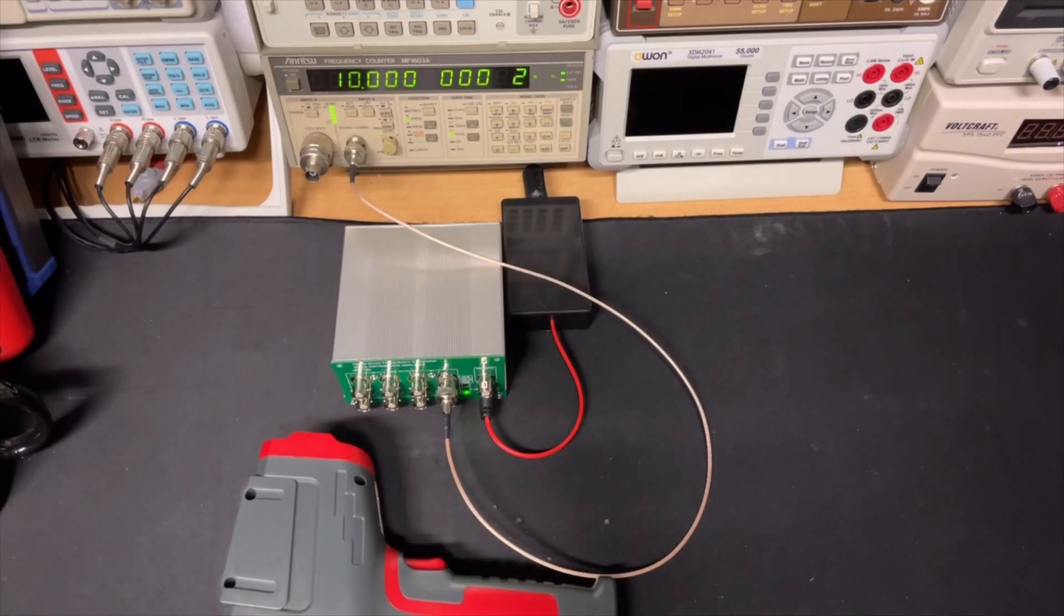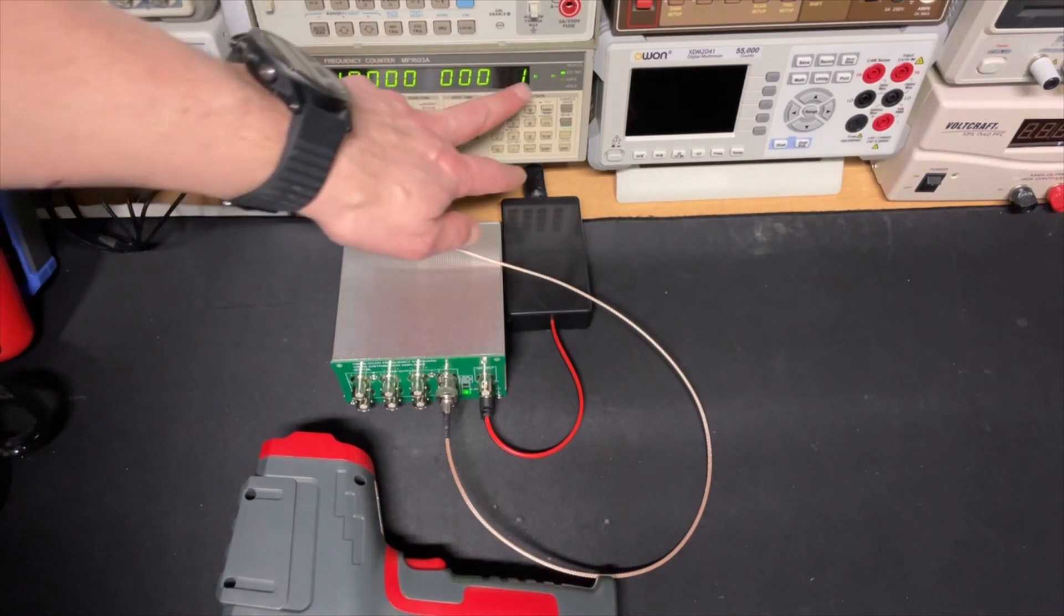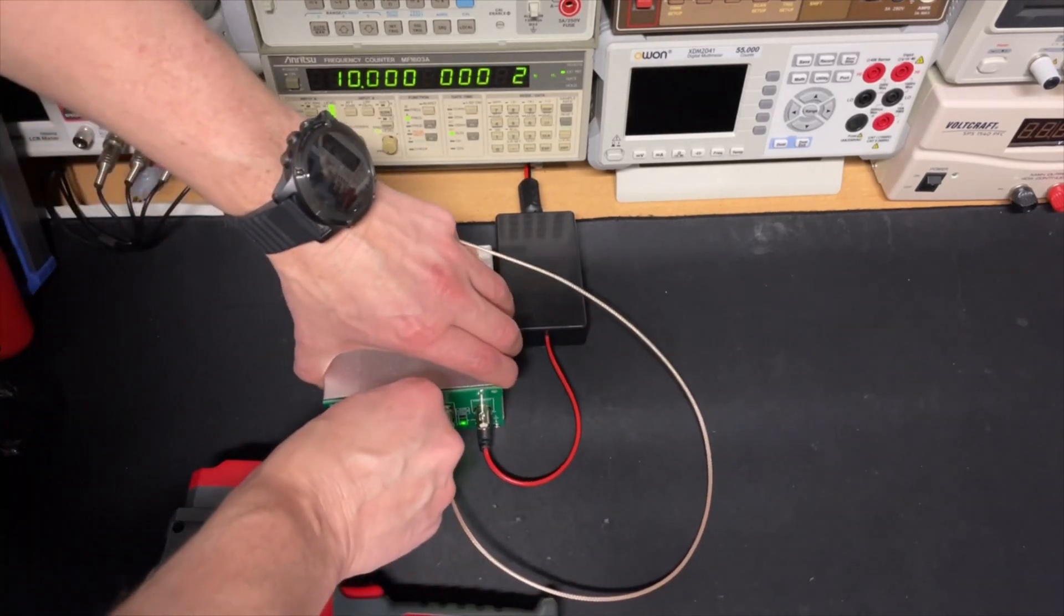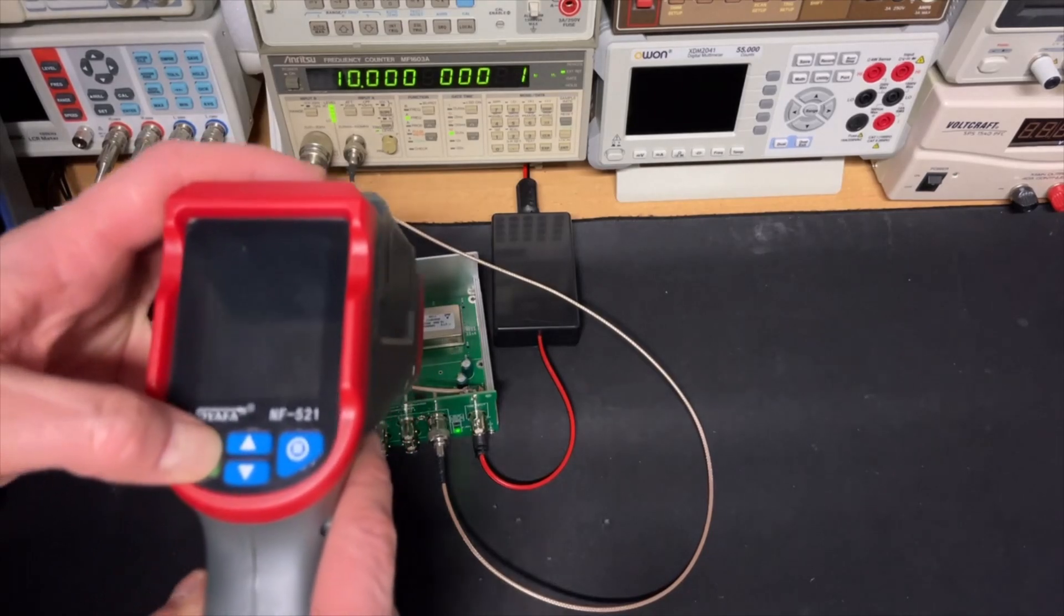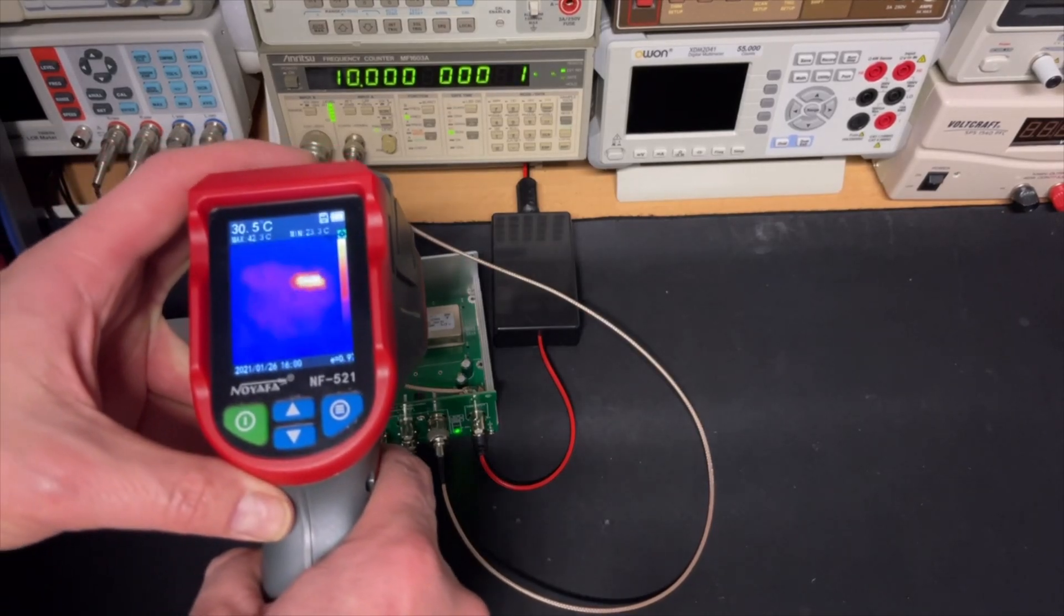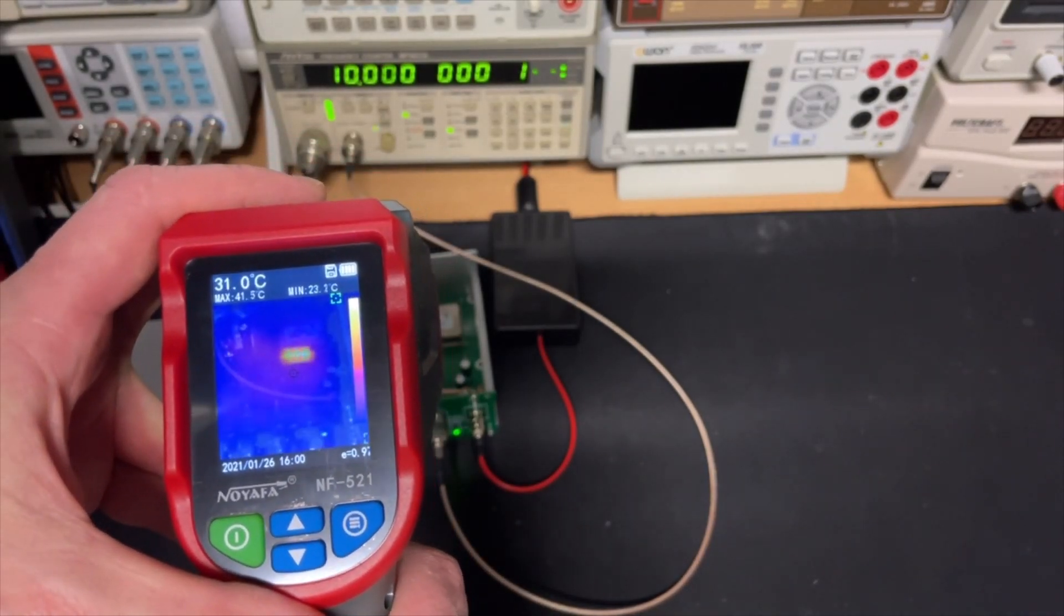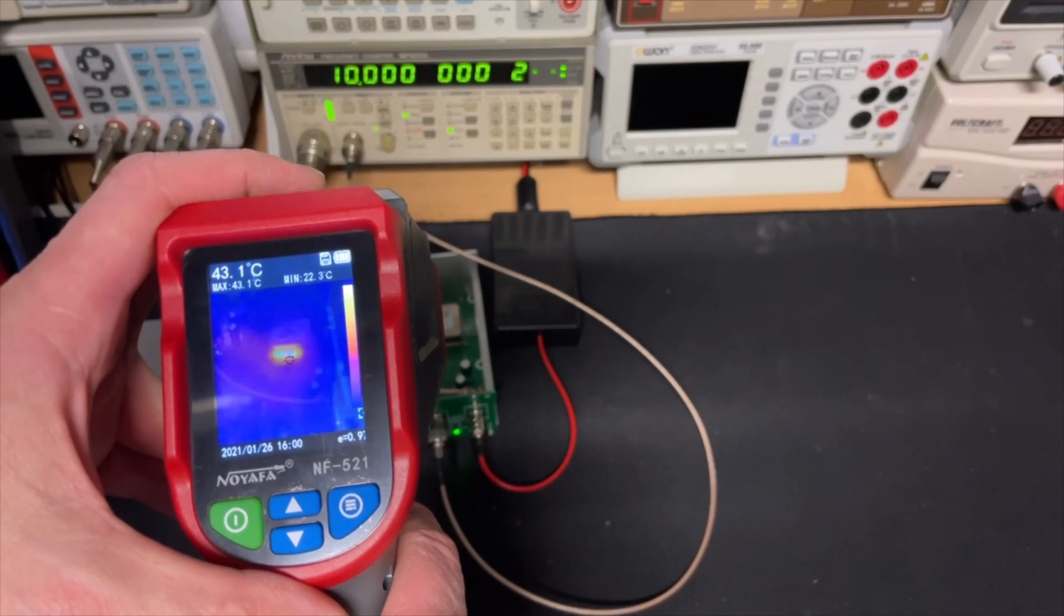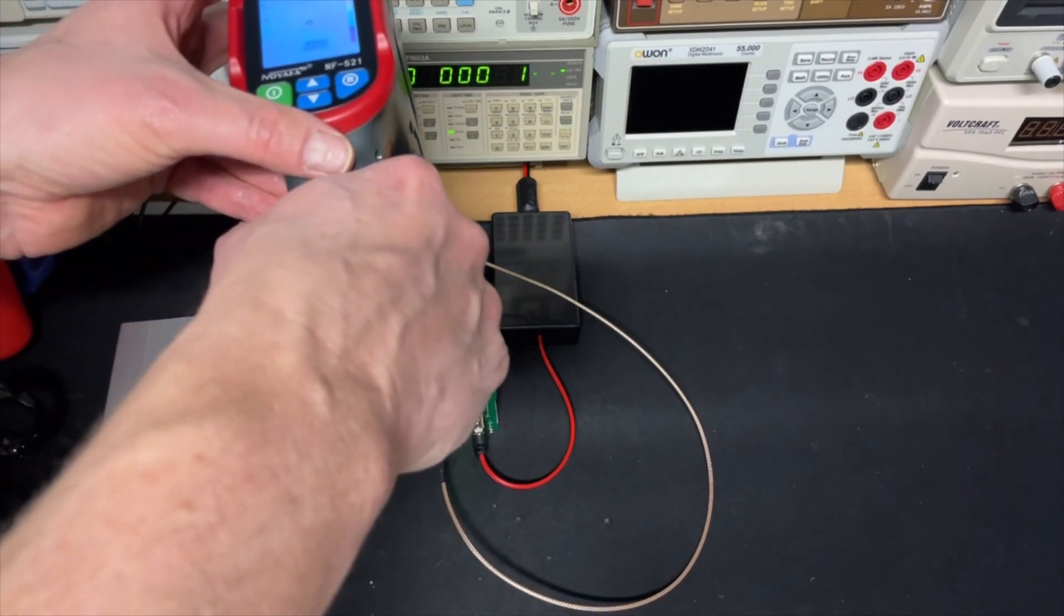I have here this distribution amplifier with built-in OCXO. It has been running now for a few minutes and as you can see it is almost there. We should see the temperature difference between the whole PCB and this oscillator which is right there because it is a little oven. Let's see if we can actually see that. Yes, clearly here with the combined picture. Let me make a shot of that.